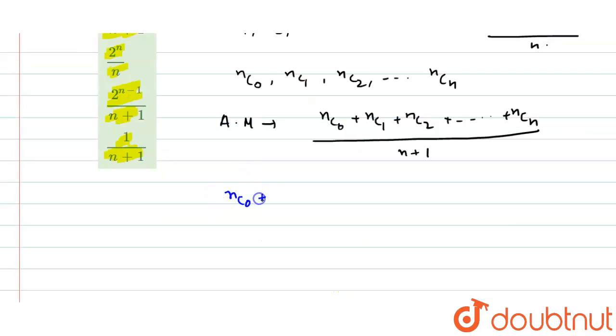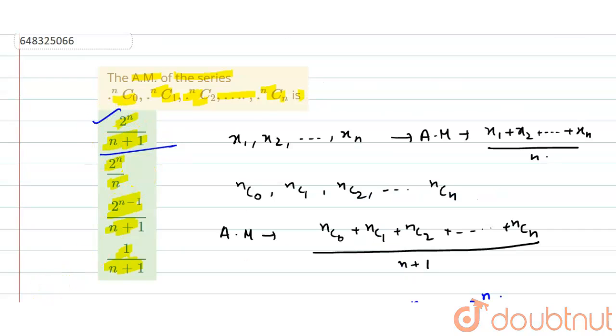We know nC0 + nC1 + nC2 + ... + nCn equals 2^n. Therefore, the arithmetic mean is 2^n/(n+1). So the first option is the correct answer.